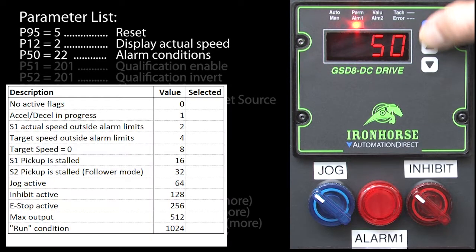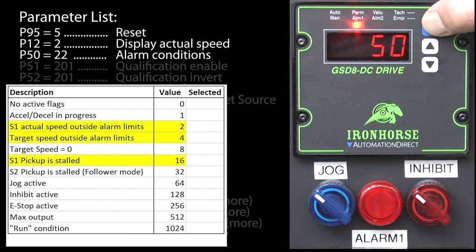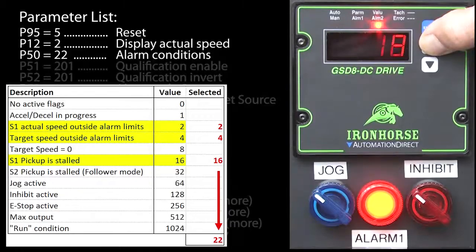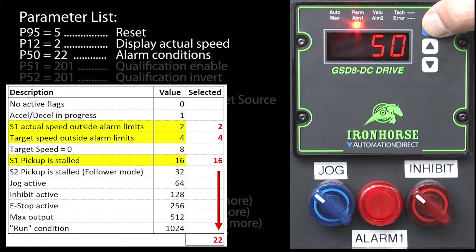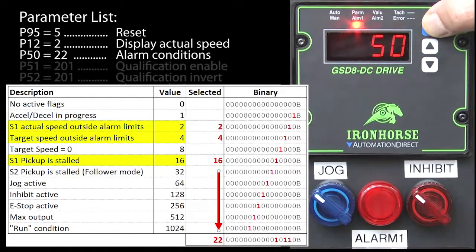The user manual has a chart that tells us what each alarm value is. We want to alarm on these so we just sum those values and put that number in parameter 50. You might recognize that these values are just setting binary bits in a word.